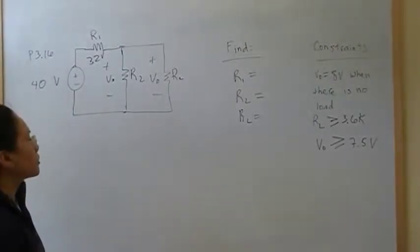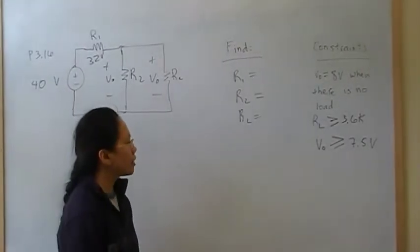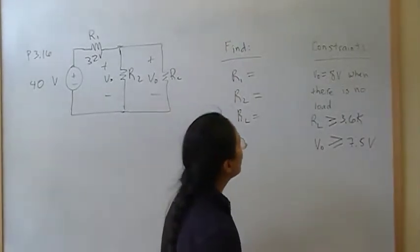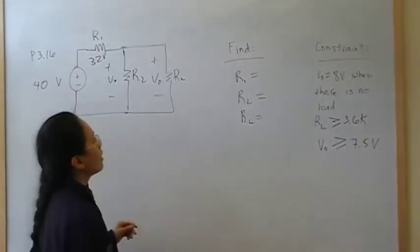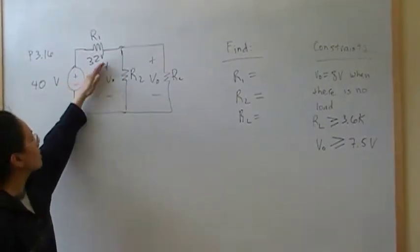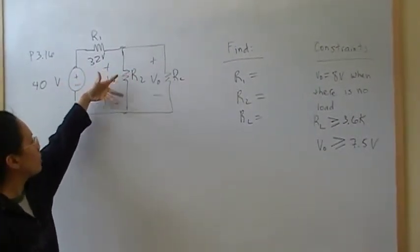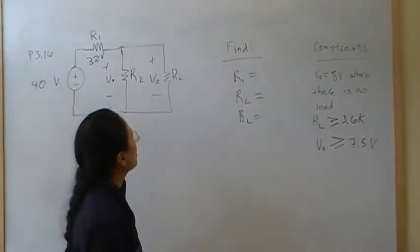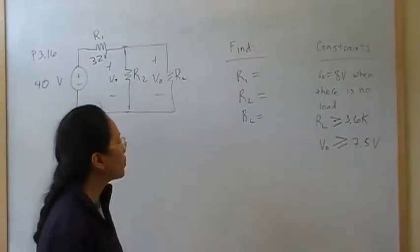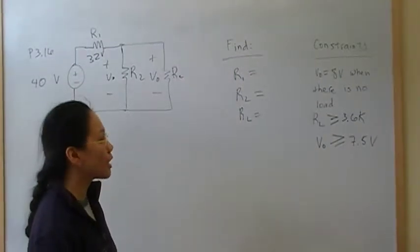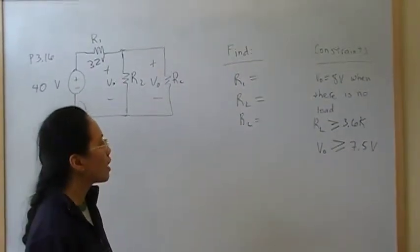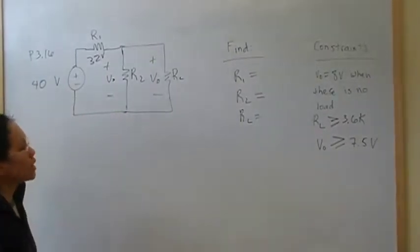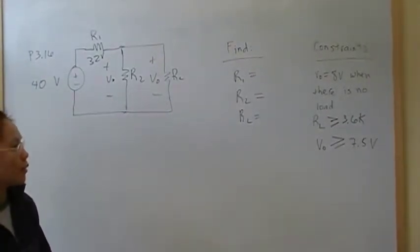We need to find what R1, R2, and the load are, given that when there is no load connected to it, the Vout, or in this case the voltage across R2 because there is no load, is going to drop 8 volts. Also, we're going to constrain the value of the load to be greater than 3.6 kilo-ohms, and the Vout when there is a load connected cannot drop below 7.5 volts.